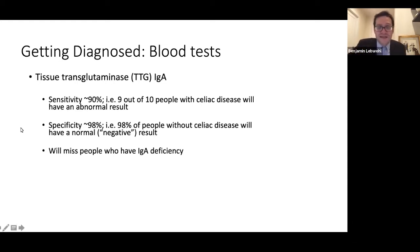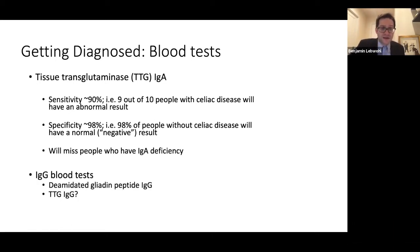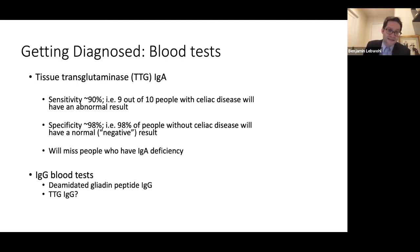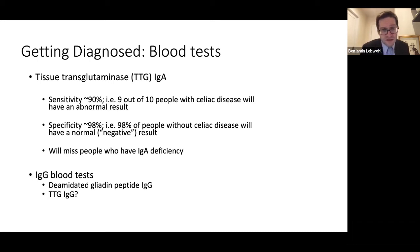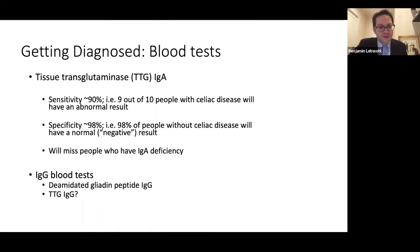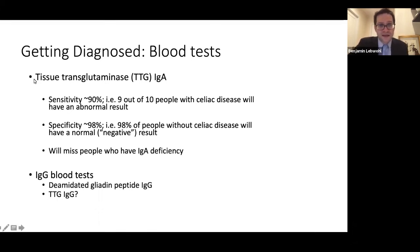There are people who have IgA deficiency, and in them it's harder to figure out if they have celiac disease. For that reason, there's another class of antibodies called IgG that have celiac-related values, and those could be tested, but they tend to be less accurate than the IgA test. So it is a trickier diagnosis and really needs to be done with the utmost care. There's the deamidated gliadin peptide IgG and the tissue transglutaminase IgG, but those blood tests are not as accurate as the tissue transglutaminase IgA.